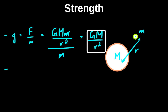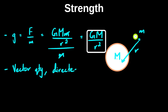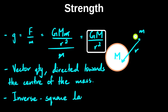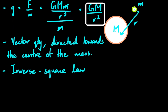A couple of ideas here. First, gravitational field strength — and any other field strength you will study in A2 — are vector quantities. The field lines show that this mass would be pulled towards the center of the larger mass, so it's a vector quantity directed towards the center. This also obeys an inverse square law, just like the gravitational force, so the gravitational field strength falls off very quickly as distance increases.